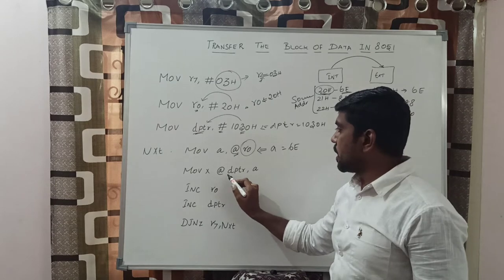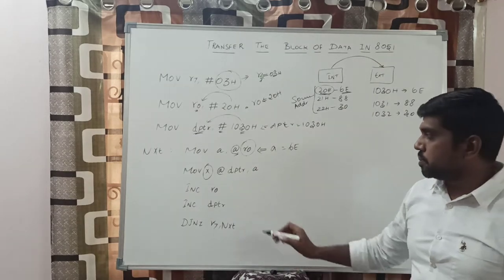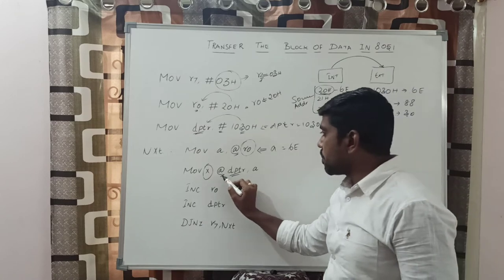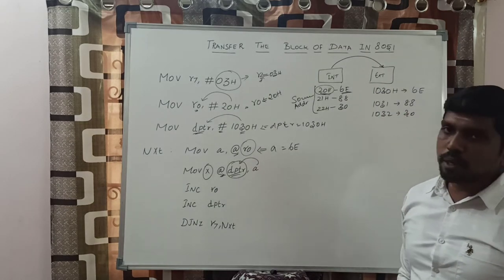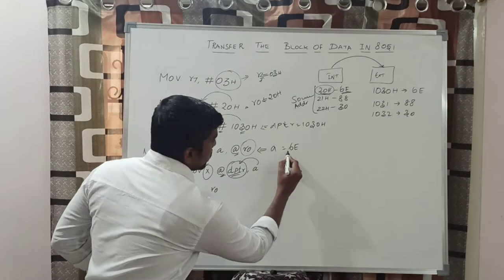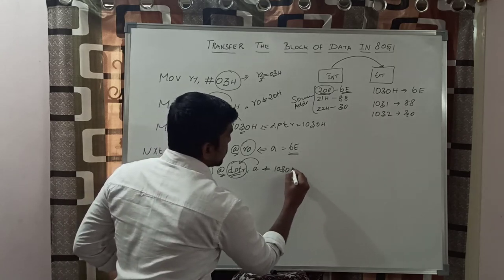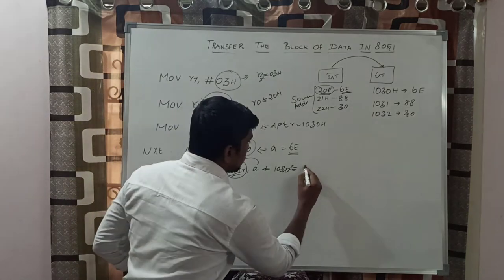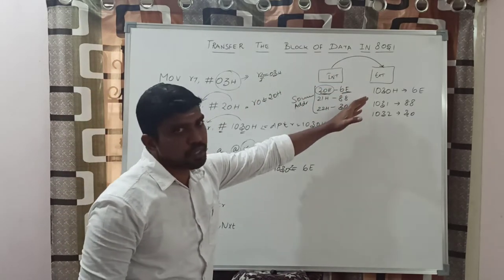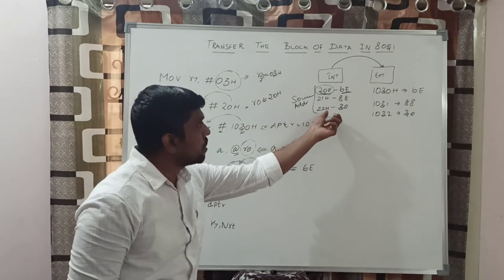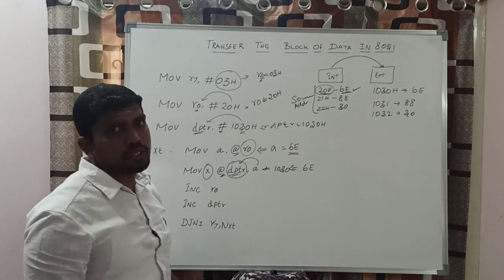The next instruction is MOVX @DPTR, A. The 'X' represents that this register holds a 16-bit value. At the address location of DPTR, whatever value is present in the accumulator is moved to that memory location. Before execution, the accumulator value is 6Eh. After execution, DPTR holds 1030h, and in that memory location the data 6Eh is stored. So the first data is transferred from internal memory location to external memory location 1030h.